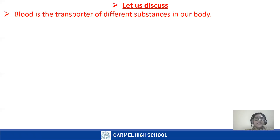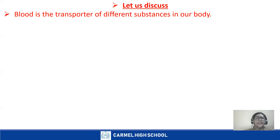Blood also helps in the defense mechanism — it protects us from disease-causing germs. You will learn in more detail in your other classes how blood protects our body. In the blood there is hemoglobin, a red color pigment which is rich in iron. Hemoglobin helps in picking up oxygen, so blood can pick up oxygen and supply it to the different parts of the body.